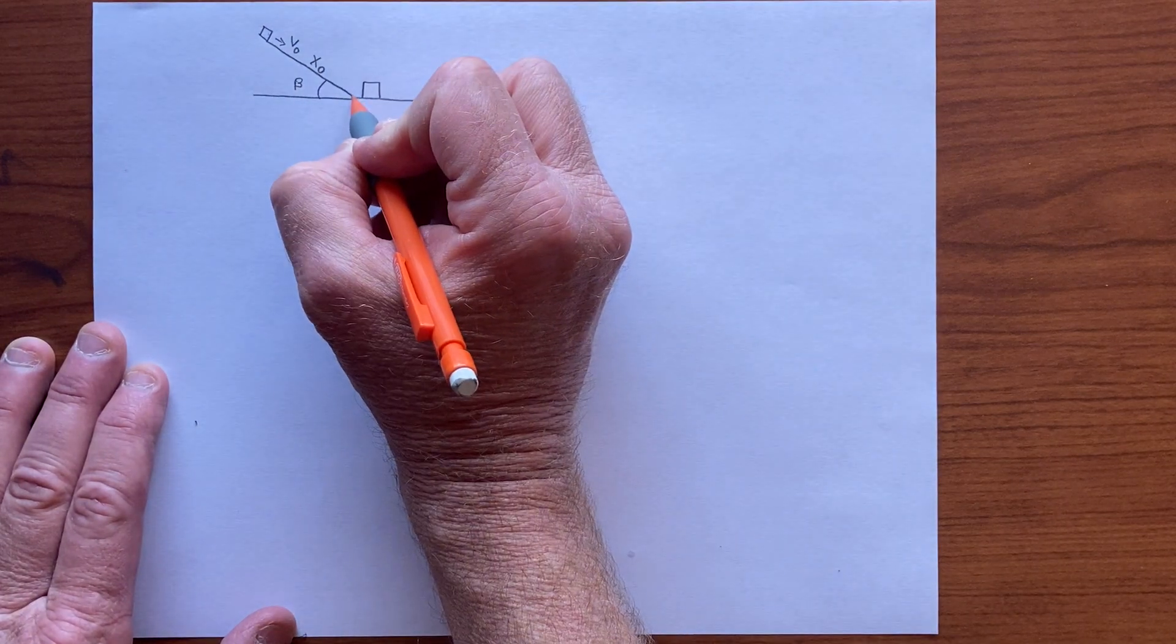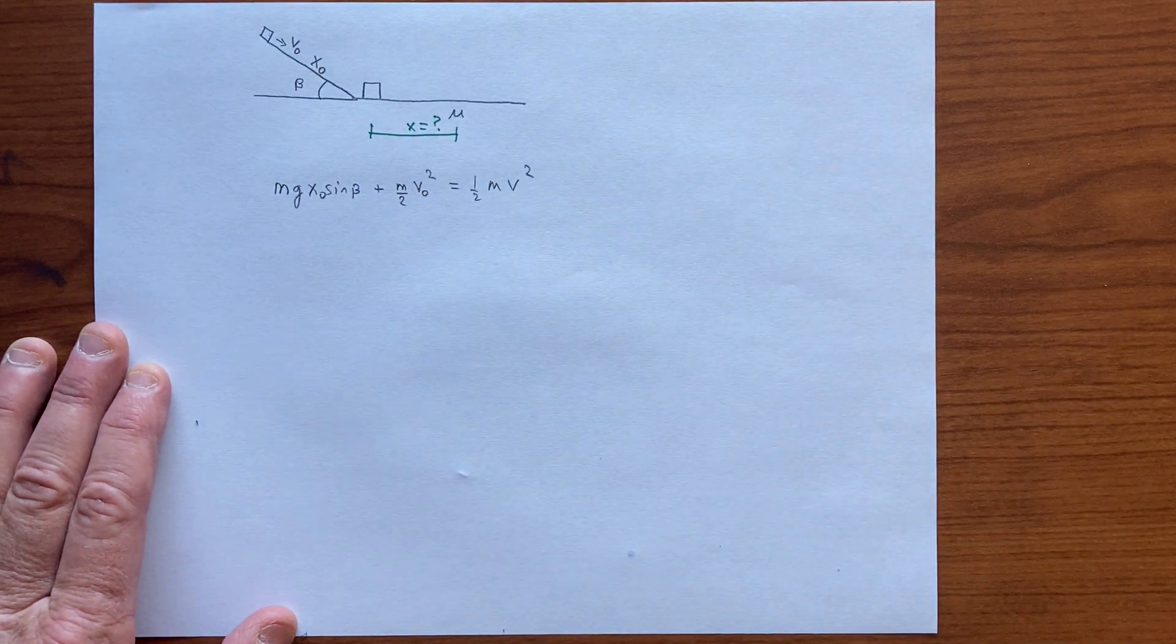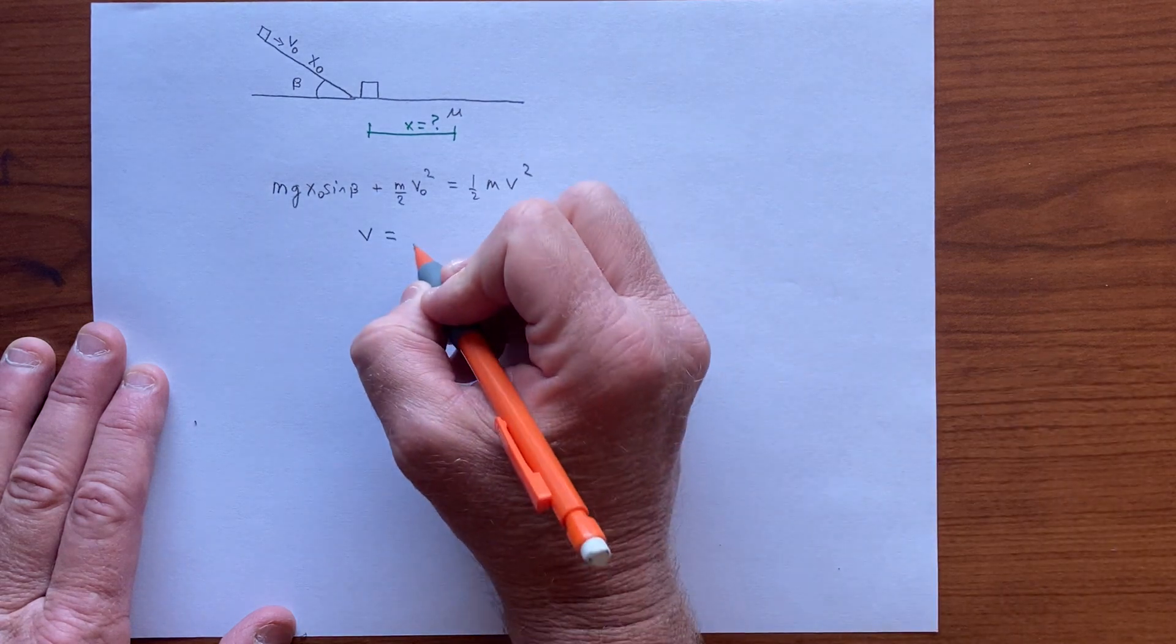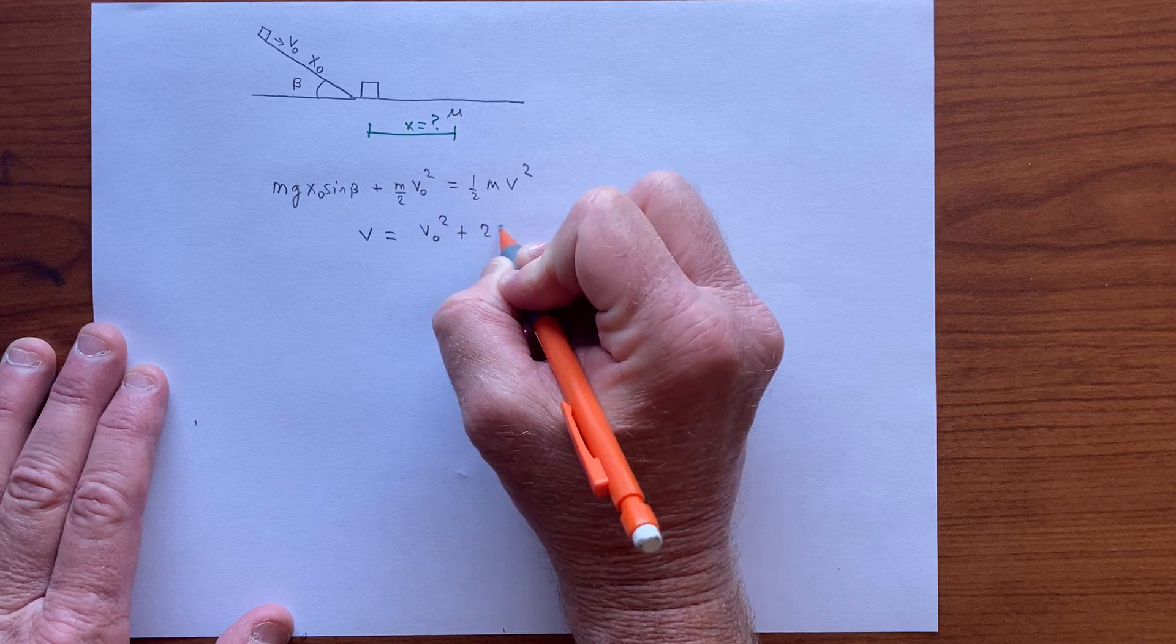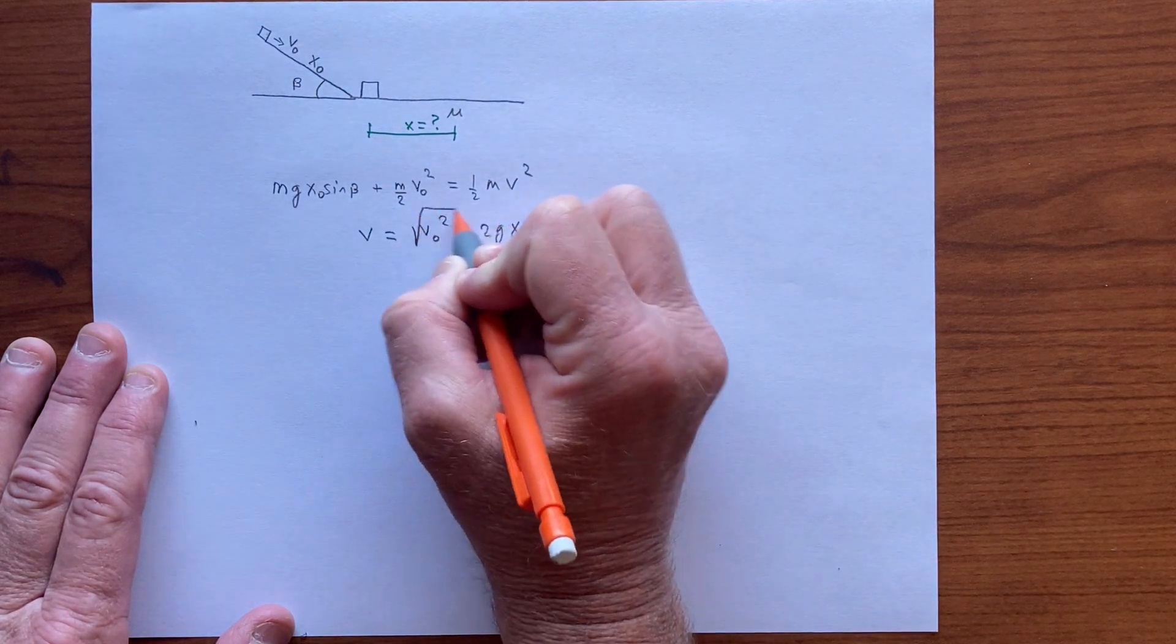And then at the bottom of the inclined plane the object ends up with a speed given by that conservation of energy equation. So the speed at the bottom is square root of v-naught squared plus 2g x-naught sine of beta.